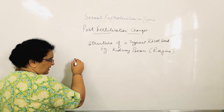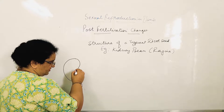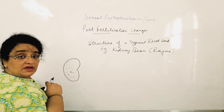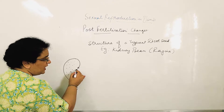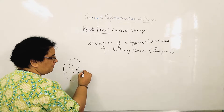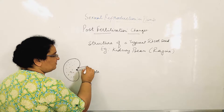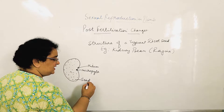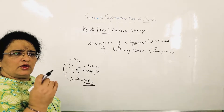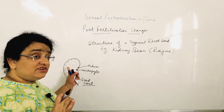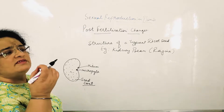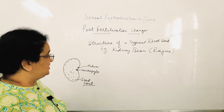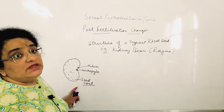If you look at rajma from the outside, it is kidney-shaped with small spots on it. That covering of rajma is the seed coat. There is a small triangle on it and a hole — that hole is called the micropyle. The triangular part is called the hilum. The covering of the kidney bean is the seed coat, which comes in light pink or dark maroon varieties.